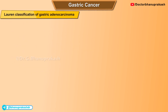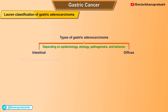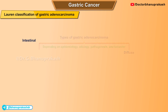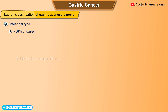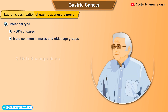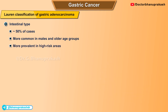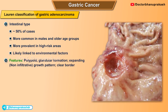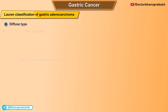The Lauren classification of gastric adenocarcinoma describes two distinct biological entities — diffuse and intestinal types — that differ with regard to epidemiology, etiology, pathogenesis, and behavior. The intestinal type accounts for approximately 50 percent of cases. It is more common in males and older age groups, is more prevalent in high-risk areas, and is likely linked to environmental factors. Its features include polypoid glandular formation and an expanding, non-infiltrative growth pattern with a clear border.